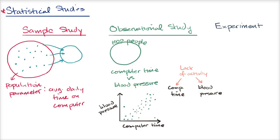What you're really seeing is that people who aren't active have both variables driven upward. So when you do an observational study and do it well, you can draw correlations, and that might give you decent hypotheses for causality — but it does not show causality, because you could have these confounding variables.